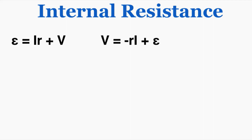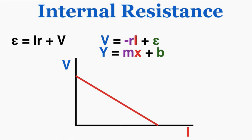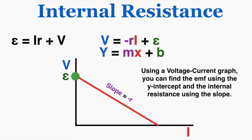Going back to the first equation, if I rearrange it and create a graph of the voltage on the y-axis and the current on the x-axis, I can see that this equation fits y equals mx plus b, where m is the slope and b is the y-intercept. This yields an important pattern: if you make a graph of voltage versus current for a circuit with internal resistance, the y-intercept of the graph is the EMF of the battery, and the slope of the graph is the negative internal resistance of the battery. So if you're ever asked which graph shows a greater internal resistance, it's the one with a steeper slope, and the greater EMF is the one with a greater y-intercept. Using a voltage-current graph, you can find the EMF from the y-intercept and the internal resistance from the slope.